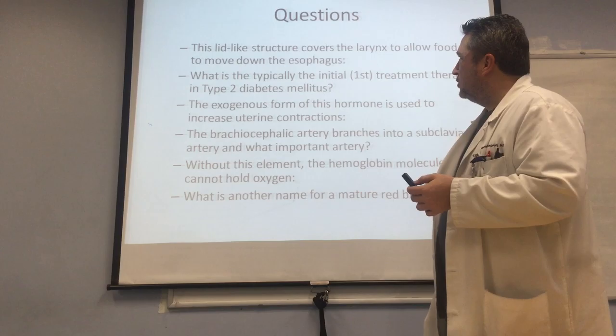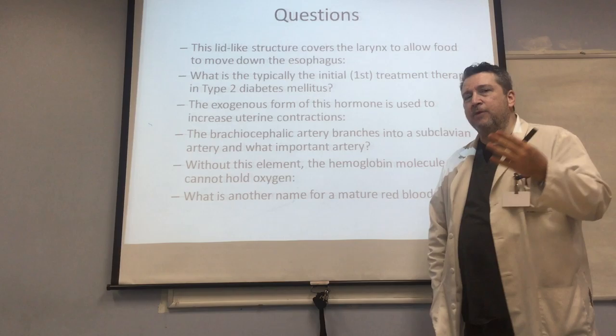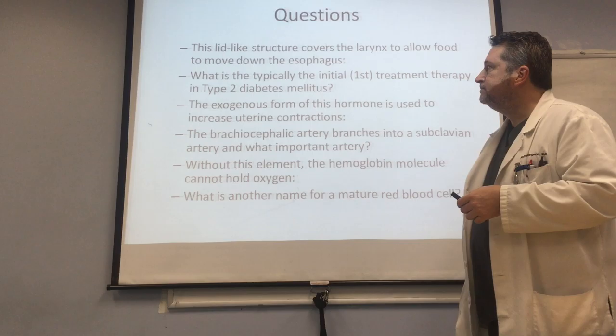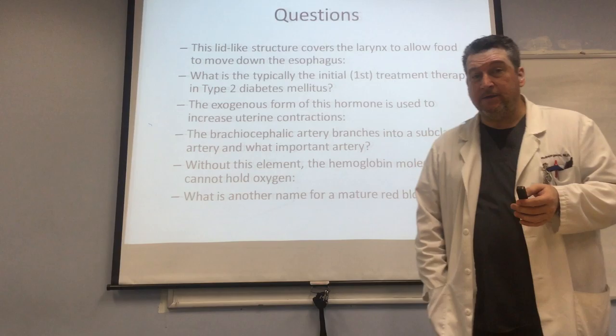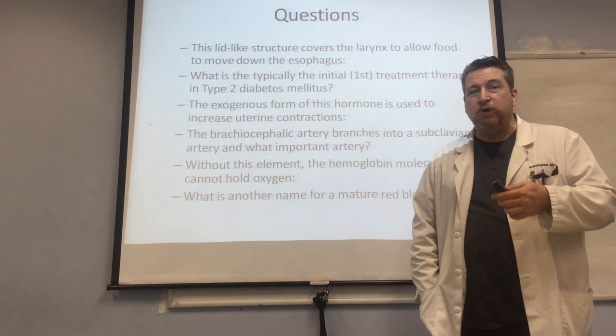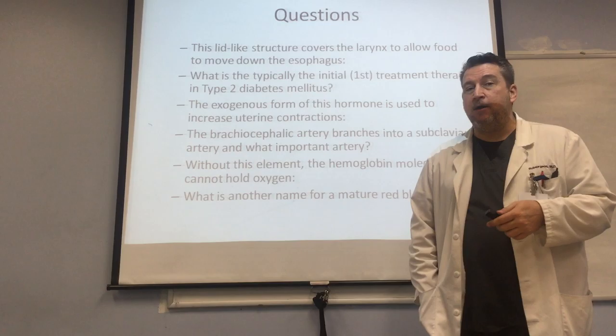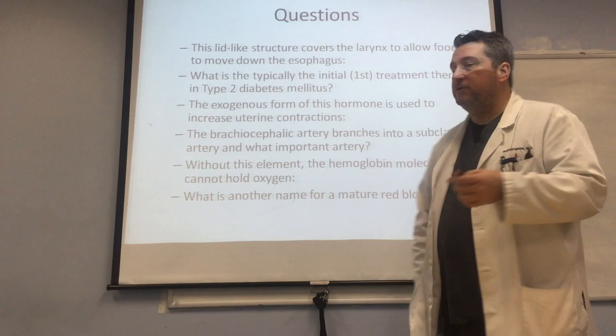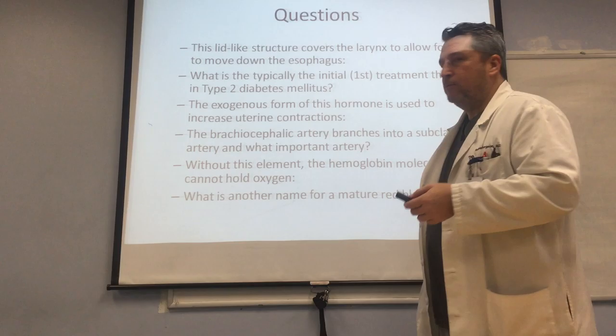This lid-like structure covers the larynx — when you swallow something, it helps keep it from going down the wrong tube. That is the epiglottis. What is typically the initial first treatment therapy in type 2 diabetes? Remember, when patients have type 2 diabetes, we can actually stop it, reverse it, or prevent it from happening simply by lifestyle modifications. The exogenous form of oxytocin is used to increase uterine contractions — we find it in pitocin.